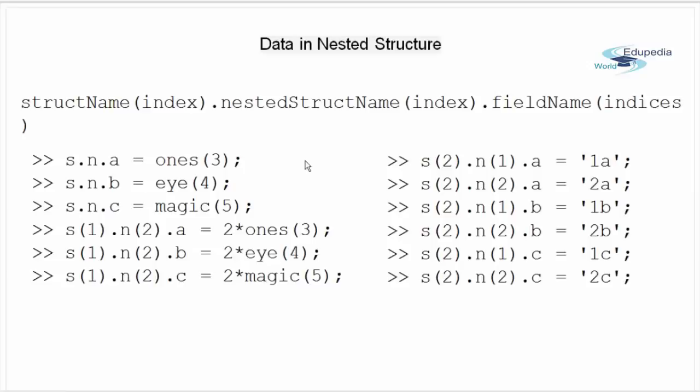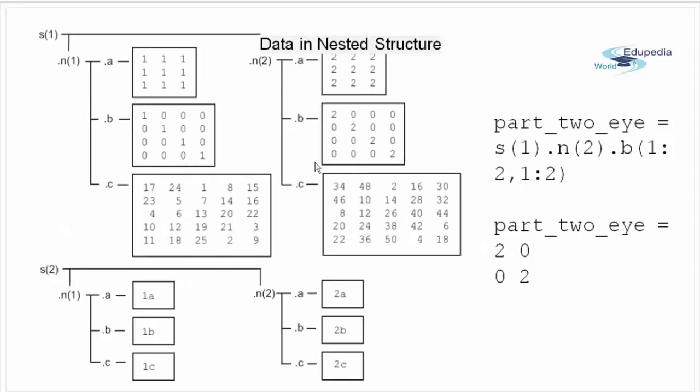Now I am going to expand the structure S so that both S and N are non-scalar that is 1 by 2. So now after I have added the data to structure S and N as shown here, my data will look something like in this diagram. So here we have first element of S containing two elements N1 and N2 and inside N1 we have three fields A, B, C and N2 also has three fields A, B, C.